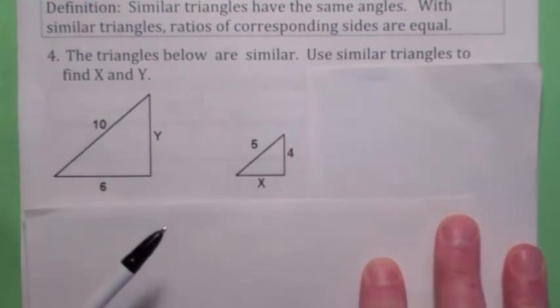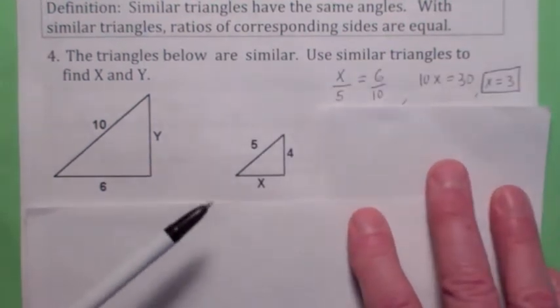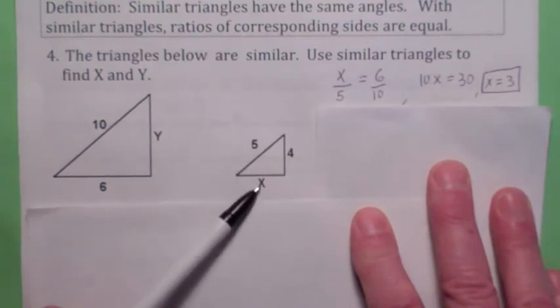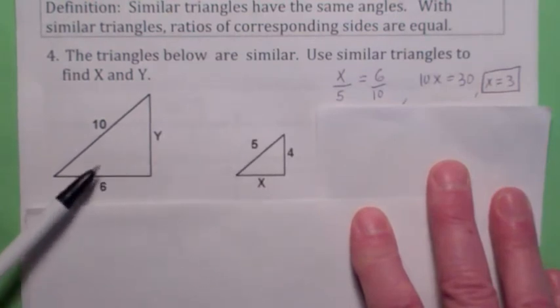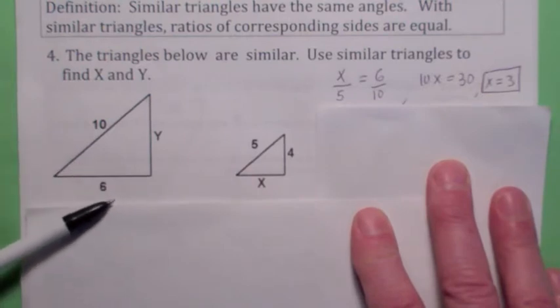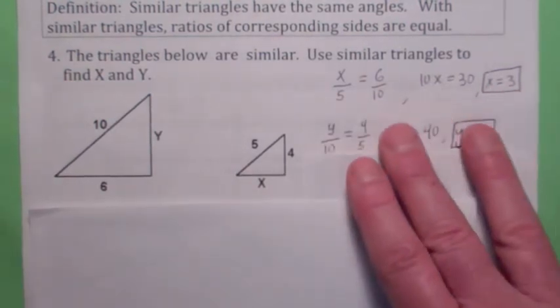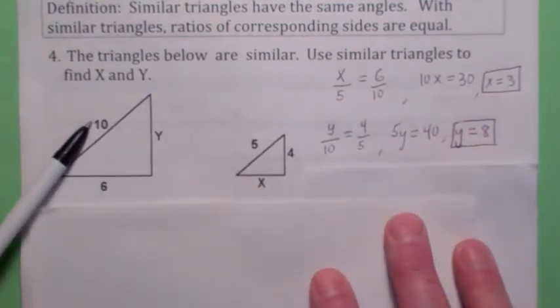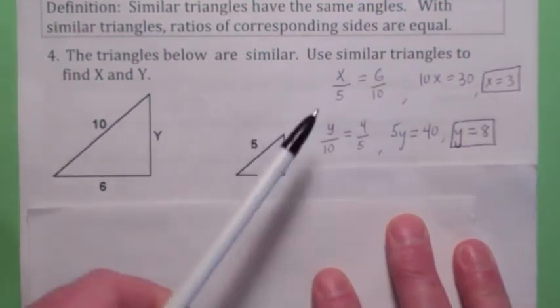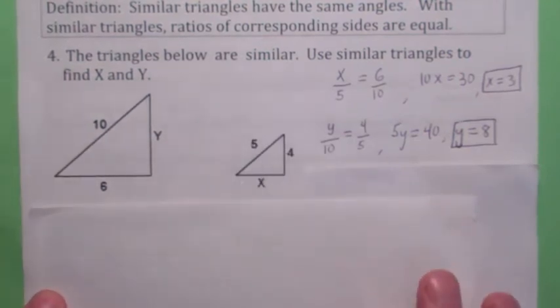But if you wanted to say, let's say you wanted to try to find x. You could say that x is to 5. This leg is to the hypotenuse. And 6 is to 10. See? That's one way you could write it. That gives you an equation involving x. When you cross multiply and solve for x, you get x equals 3. So how could you solve for y? Well, you could say y is to 10 as 4 is to 5. See? This side is to this side as this side is to this side. Then you could cross multiply and solve for y. So y would equal 8.